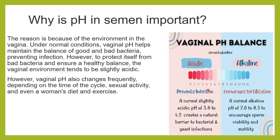The reason semen pH is important relates to the vaginal environment. The vagina is slightly acidic because it must maintain growth of good bacteria, prevent growth of bad bacteria, and maintain a healthy environment. The vaginal pH changes depending upon the menstrual cycle.